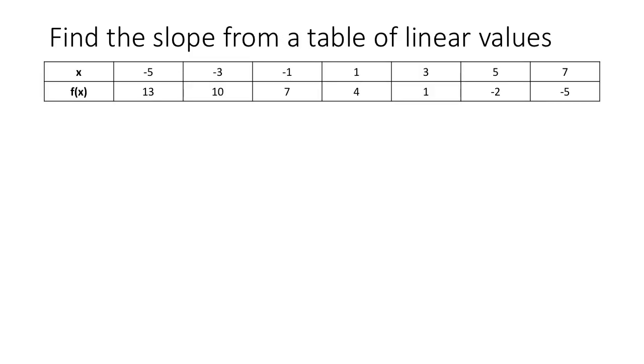This last example is a little bit different. Instead of being given a picture, we're given a table of values and asked to use it to compute the slope. Well, just like with the line from the last example, we just need to find two points and then we can compute the slope from that. Because the function is linear, it doesn't matter which two points we identify. We just need to identify any two points and we can calculate the slope.